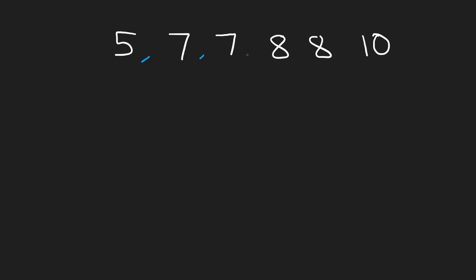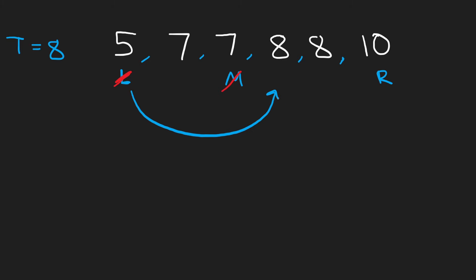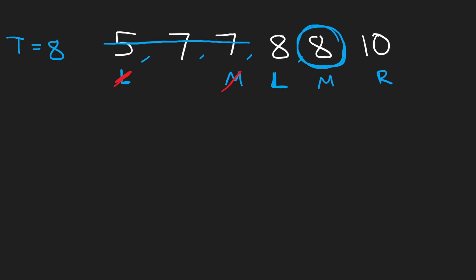Let's say this is our input array with six elements and we want to find target eight. Assuming we do a regular binary search, we have a left and right pointer initially at each end. We compute the middle index by taking left plus right divided by two. The middle value is seven — not our target — so we update the left pointer because eight is greater than seven. We shift left over and recompute the middle, and now we see the value is eight, which is our target.